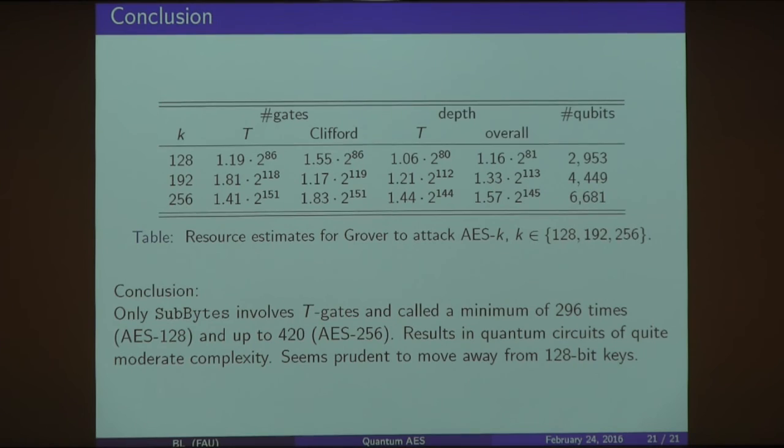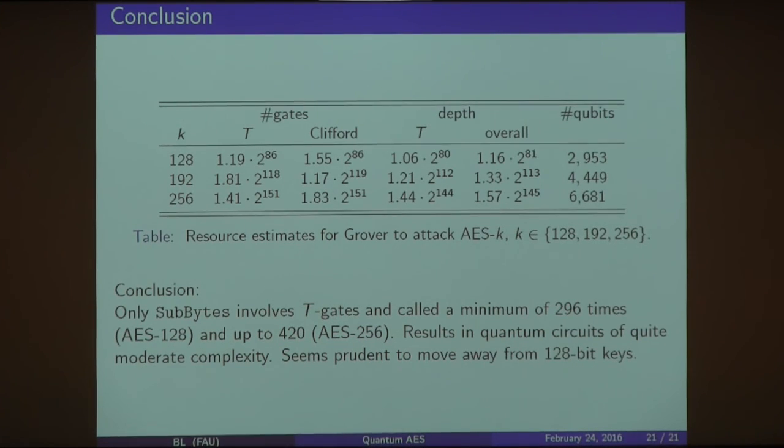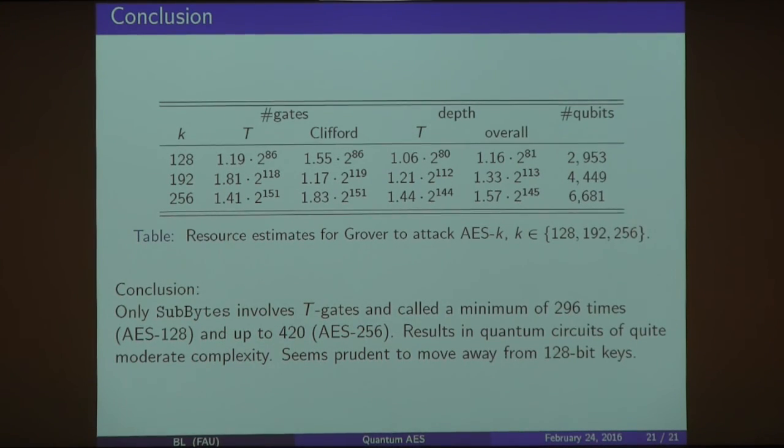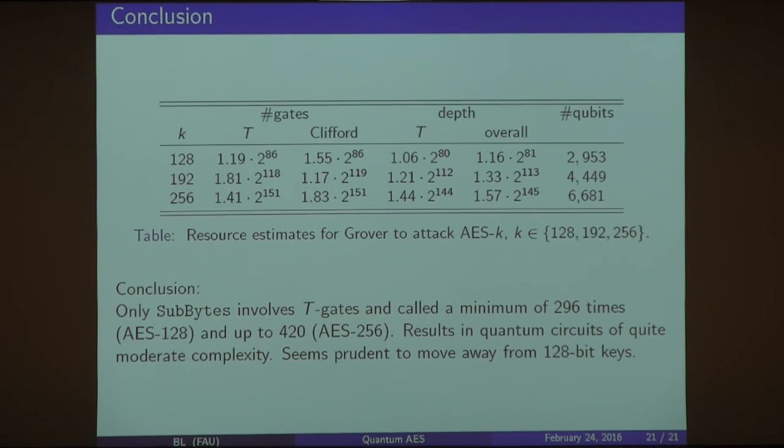That gave us our results there. And then finally we have our total number of gates and circuit sizes to actually estimate a Grover attack on AES. So implementing AES that many times gave us these numbers with these specific number of qubits and gates and complexity. So that's it.